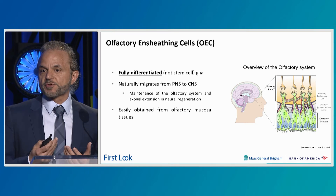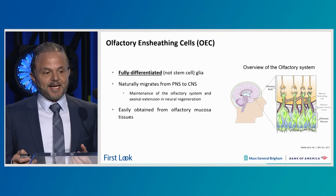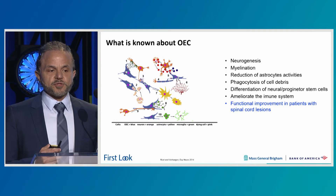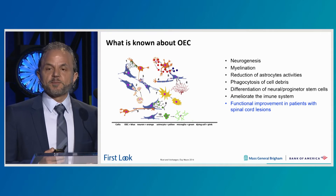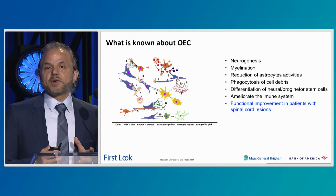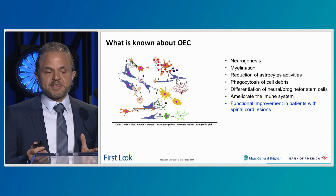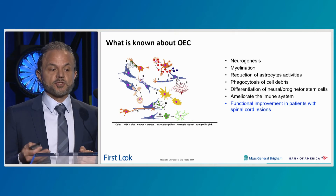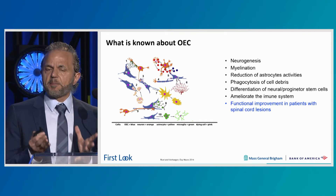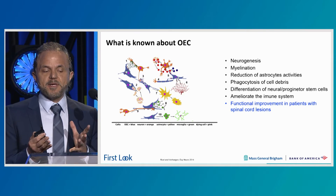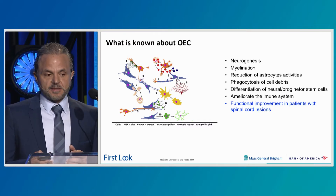Typically a neurosurgeon goes in to perform their surgery, removes this tissue and discards it — but this tissue is actually very precious for us; this is what we use. What's known so far about OECs: they're involved in neurogenesis and myelination, which is why they've been used clinically for spinal cord lesion and have shown functional improvement in clinical trials. They were not tested in cancer before, but when you look at their properties — reduction of astrocyte activity, phagocytosis, immune modulation, and ability to differentiate neural stem or progenitor cells — all of these actually apply in brain tumor or other types of cancer.